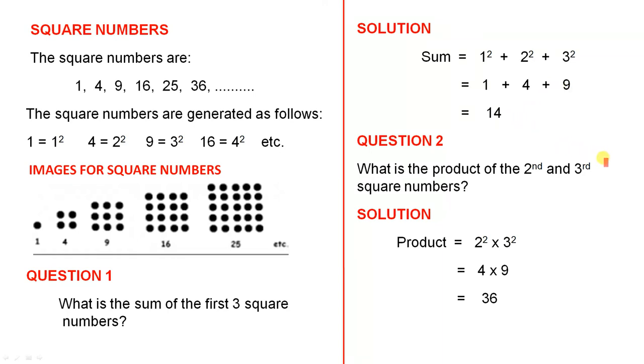What is the product of the second and third square numbers? Solution. Product means multiplication. So the second square number is 2 squared, the third square number is 3 squared, 4 times 9, that gives you 36.